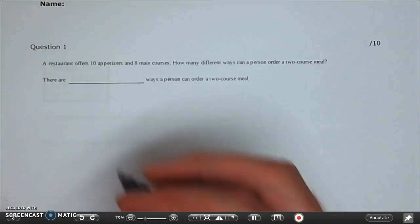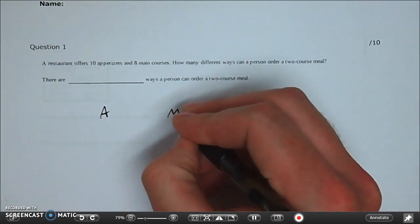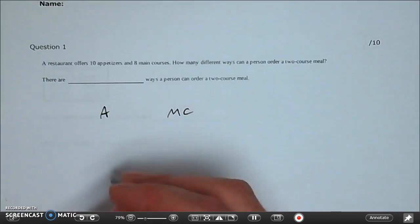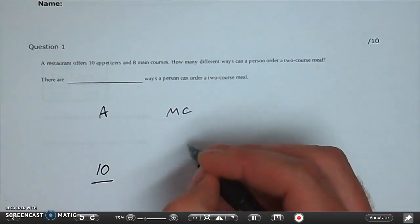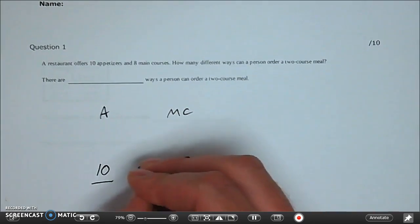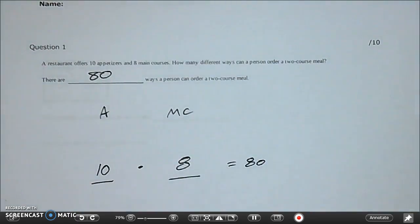Okay, so here we have to have an appetizer and we have to have a main course. So how many options do we have as an appetizer? Well we have 10 options and then how many options do we have for a main course? We have 8 and if you simply multiply those together you'll get 80 and that's the amount of combinations you have for a two-course meal.